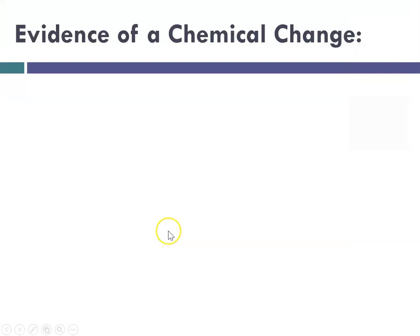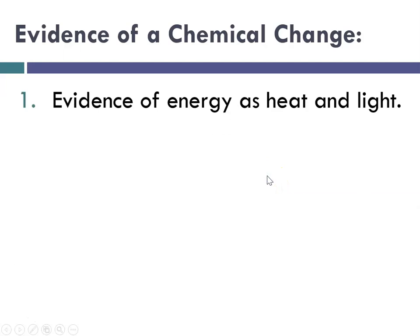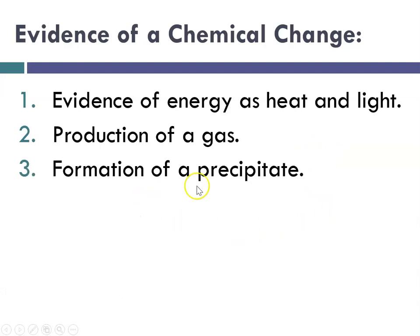And we can also talk about the evidence of a chemical change. So what are things that are evidence? And usually one or more of these takes place. So we talk about evidence of energy as heat and light, and energy can be absorbed or released. And then we talk about the production of a gas. Again, something new has formed. We talk about formation of a precipitate. That would be a new solid that forms. And we talk about color changes, and sometimes there are also odor changes.